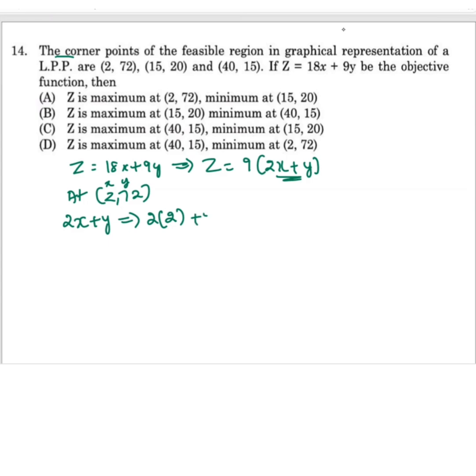So 2 into 2 plus 72. That will lead to 2s are 4, plus 72 will be 76. Now that implies Z equals 9 times 76. So 9 into 76 is 684.